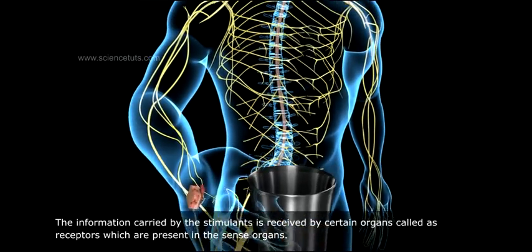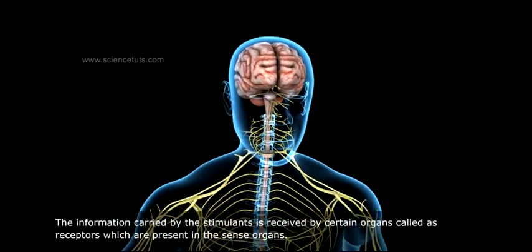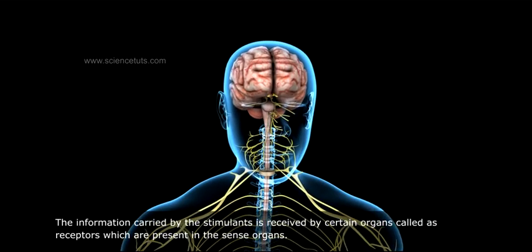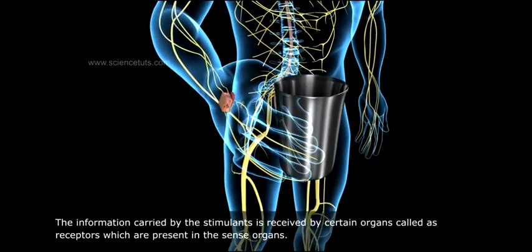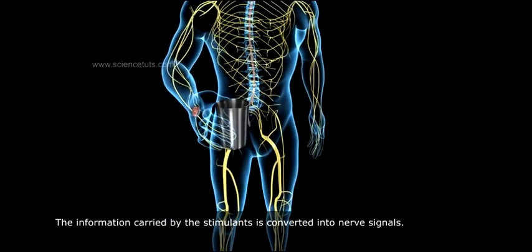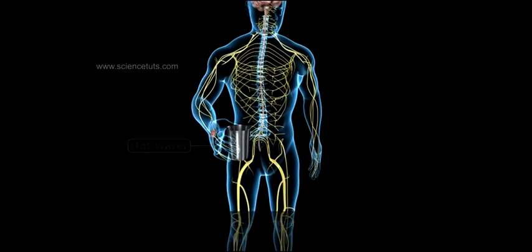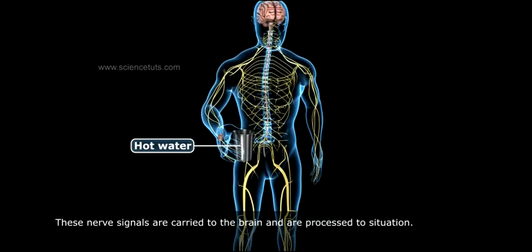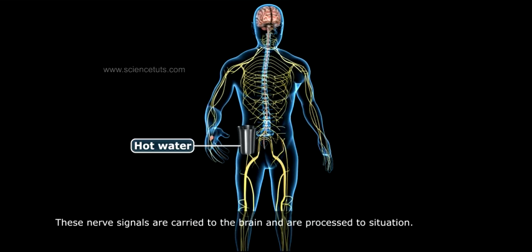The information carried by the stimulants is received by certain organs called receptors, which are present in the sense organs. The information carried by the stimulants is converted into nerve signals. These nerve signals are carried to the brain and are processed into sensation.